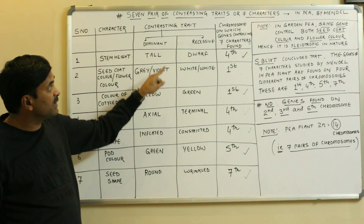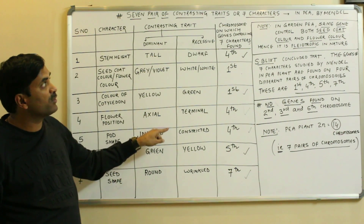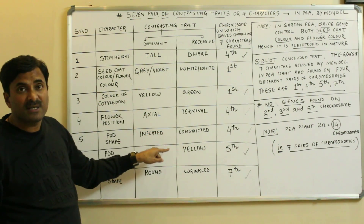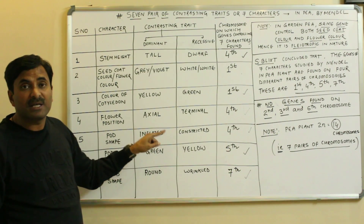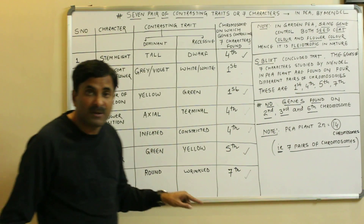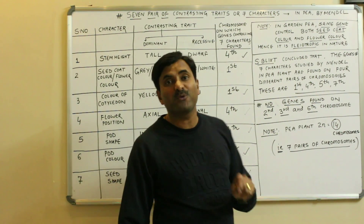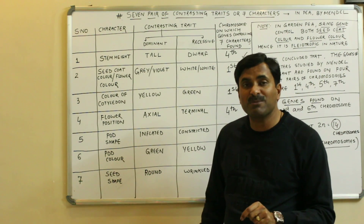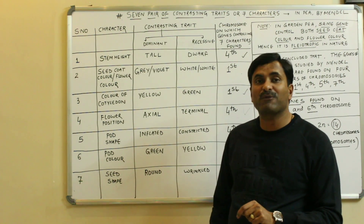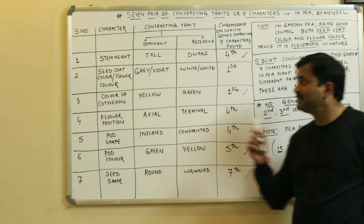So students, these are the seven pairs of contrasting characters studied by Mendel in the pea plant. We will be coming soon with more videos. Thanks a lot for watching. If you want to take a screenshot of this video, you can.